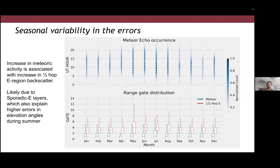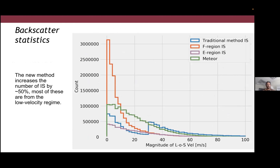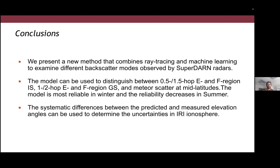To quickly summarize: we noticed a seasonal trend where errors were highest in summer, because IRI cannot represent phenomena like sporadic E, which are more frequent in summer, leading to higher errors in summer and lower in winter. Our method shows significant improvement over the traditional method. We found a significant increase in the number of backscatter points that are correctly identified, and including these newer backscatter points brings us into closer agreement with measurements from other instruments. I'll conclude there — sorry for going over time.